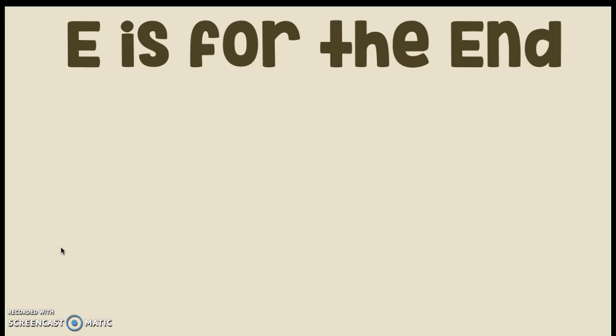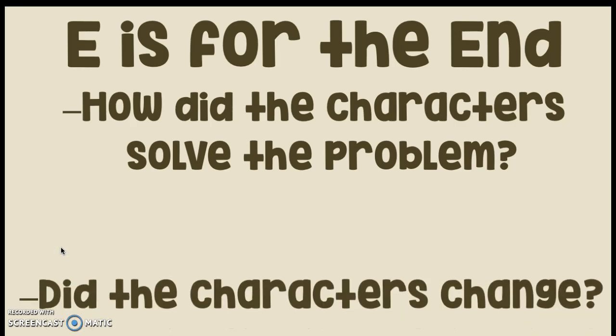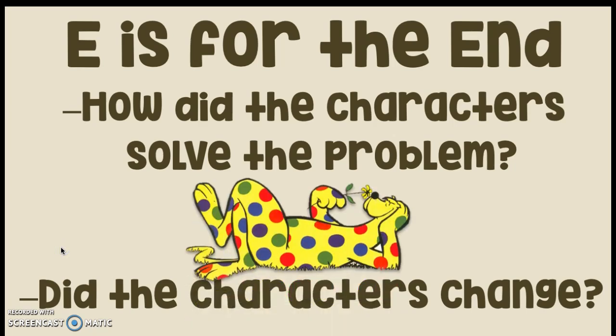And finally, E is for the end. In the end, we answer questions like: how did the characters solve the problem, and what did they do? Did the characters change at all throughout the story? For example, this friend — in his story, he wants to be part of a zoo. You learn about him wanting to be part of the zoo in the very beginning. Then in the middle, he shows off all the tricks he can do to prove he should be part of the zoo. And then in the very end, he solves his problem by actually joining the zoo.